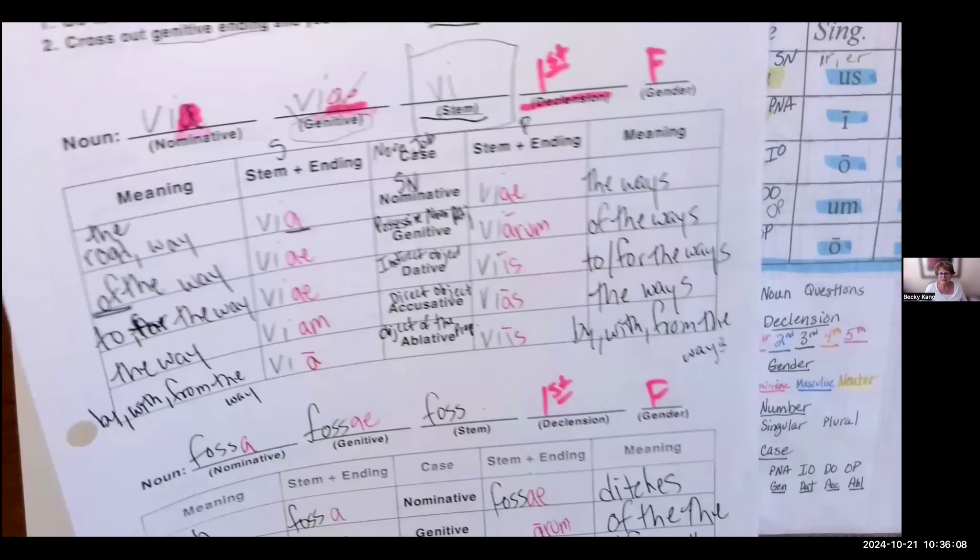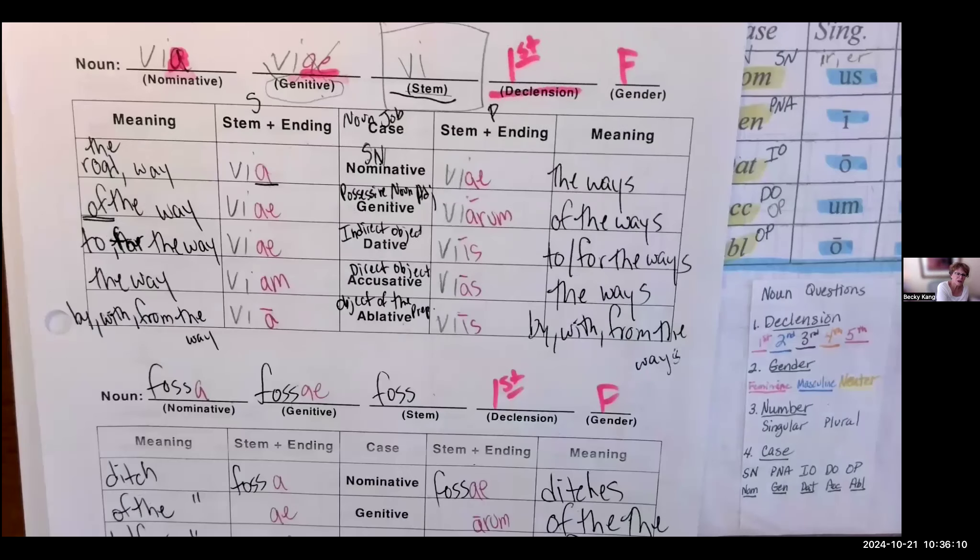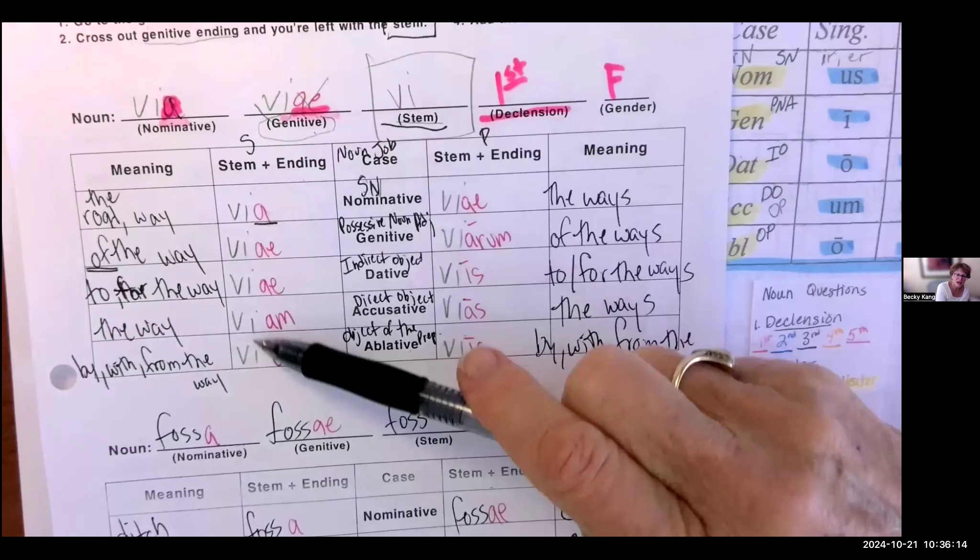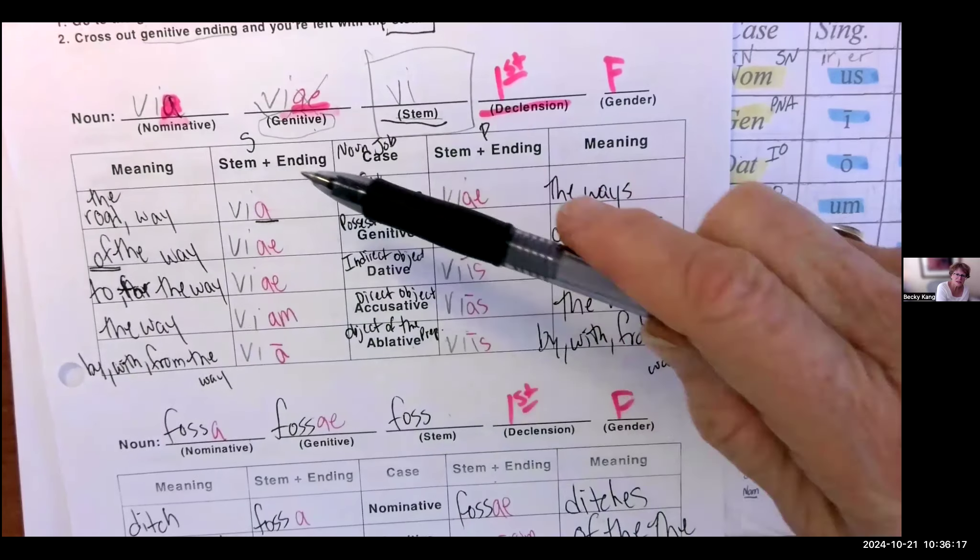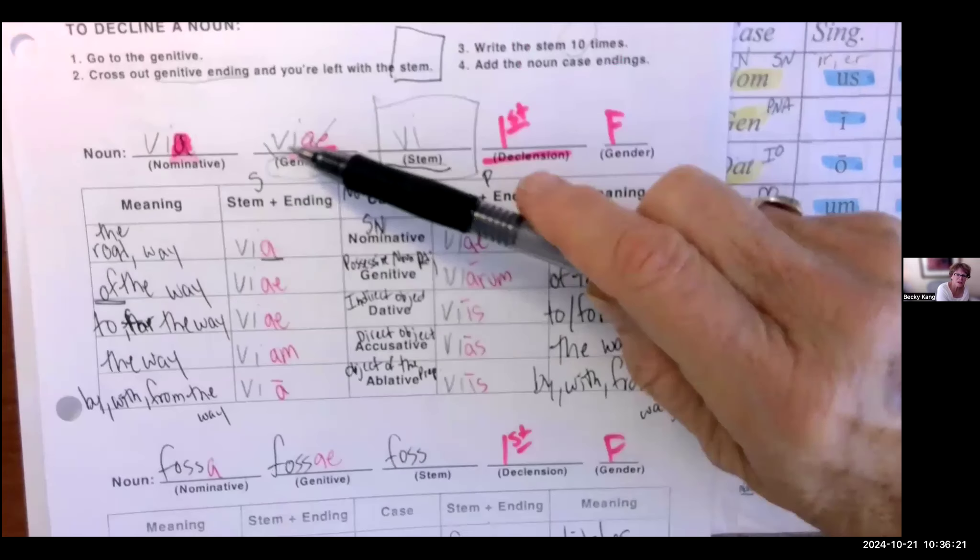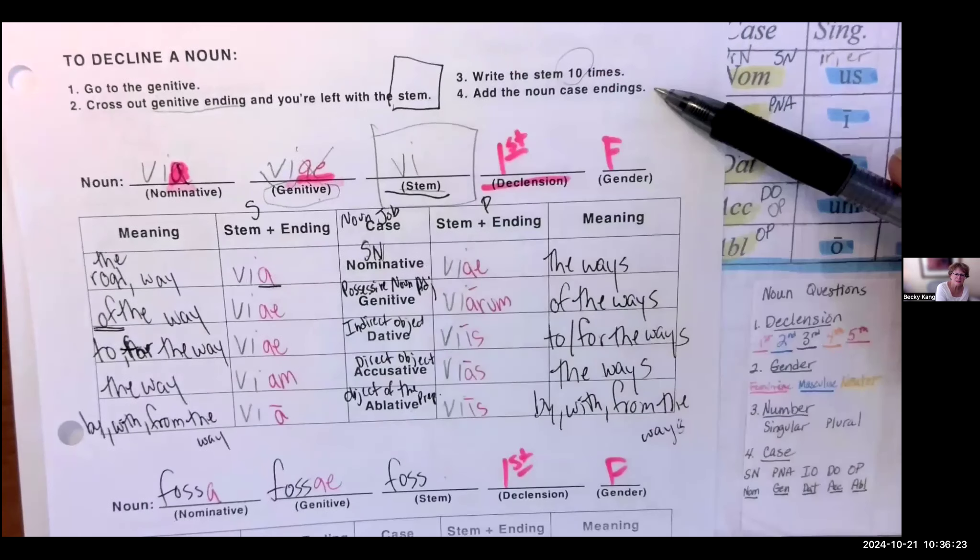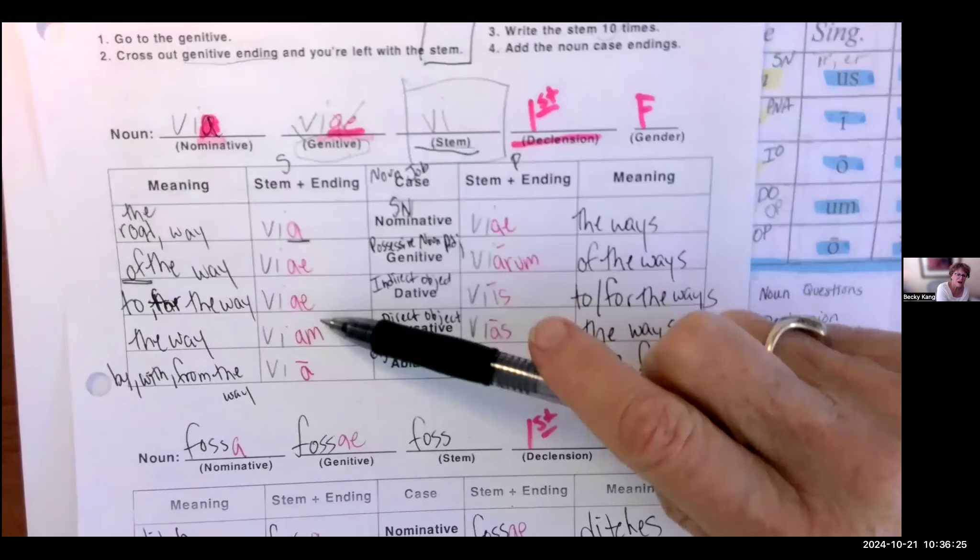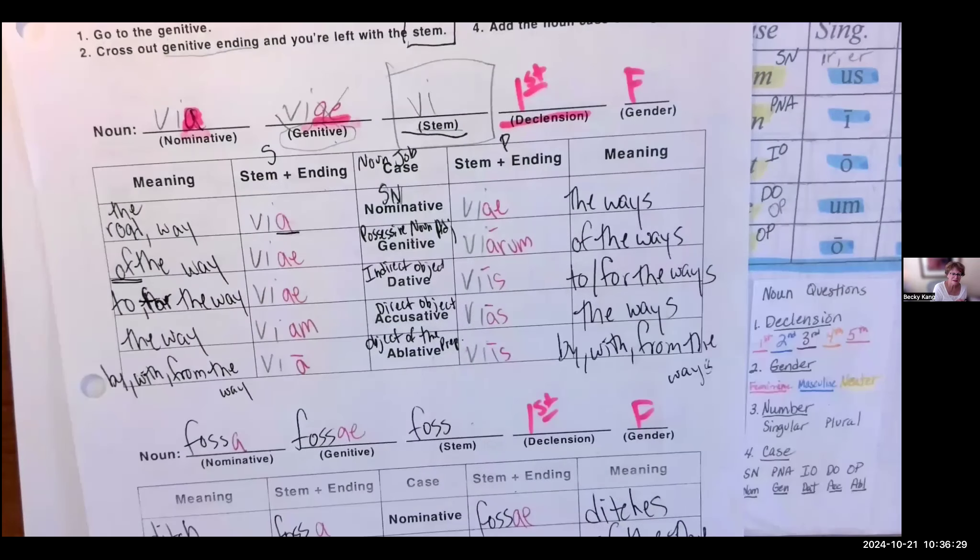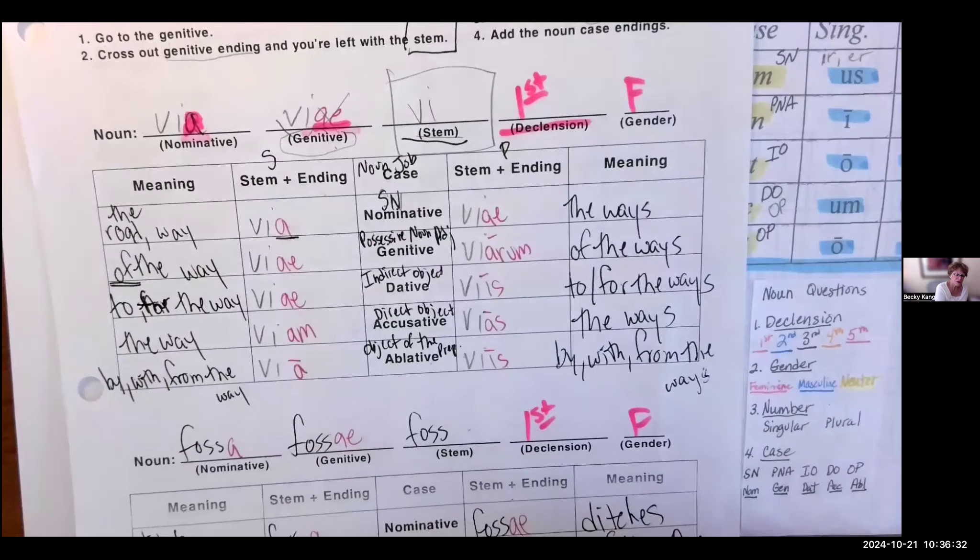So, Latin is all about endings and stems. Stems and endings. So, when you decline something, you write the stem ten times, because there's five parts of speech, singular and plural. And then you put the endings on, right? Add the noun case endings: a, ai, am, a, ai, arum, is, as, is. And then you write the English. All right? That's what you had to do for homework.